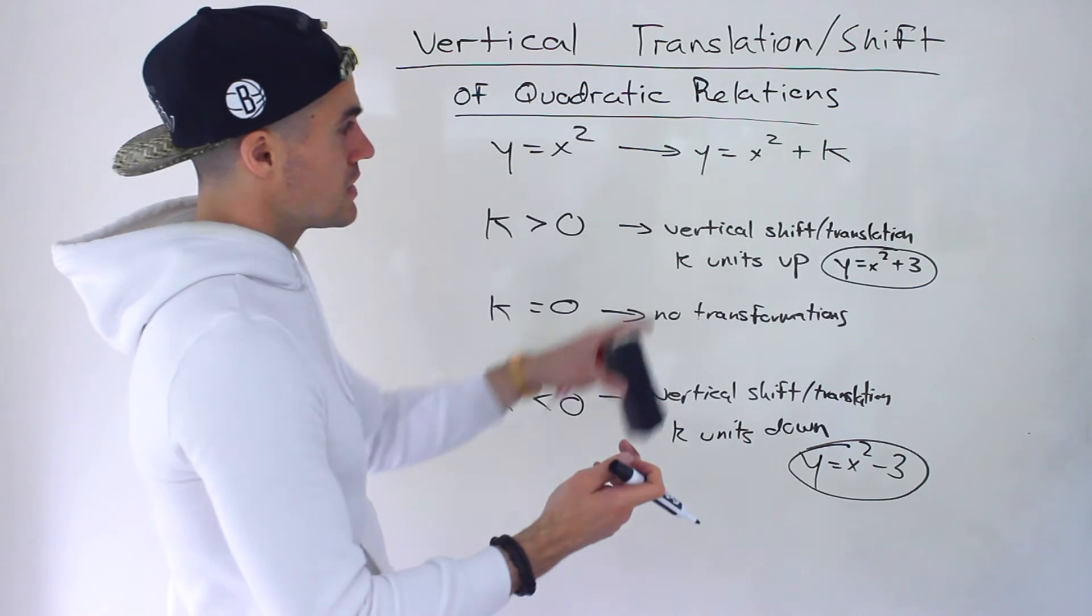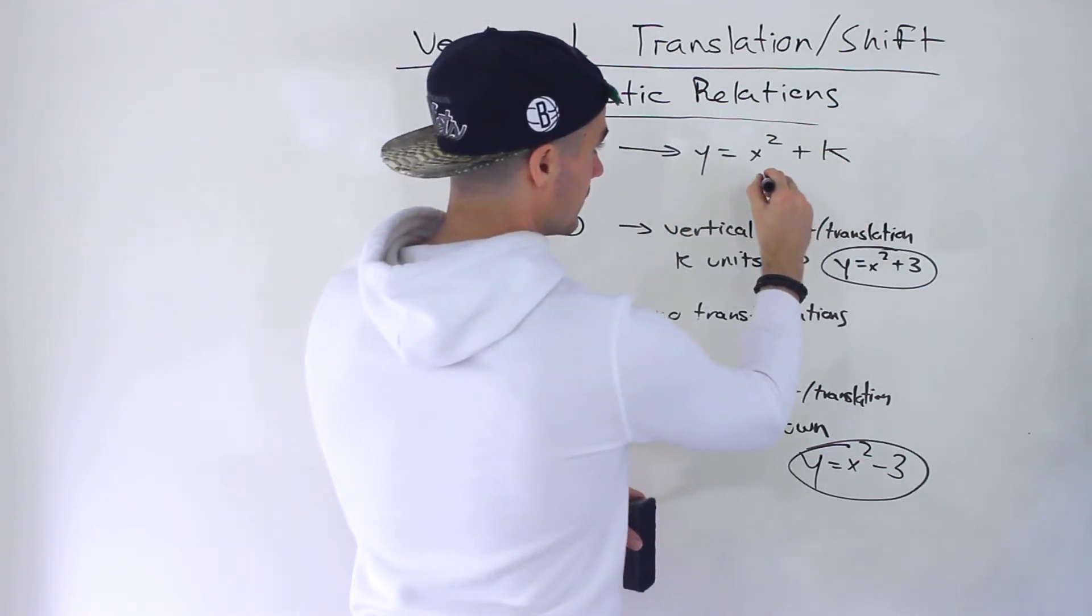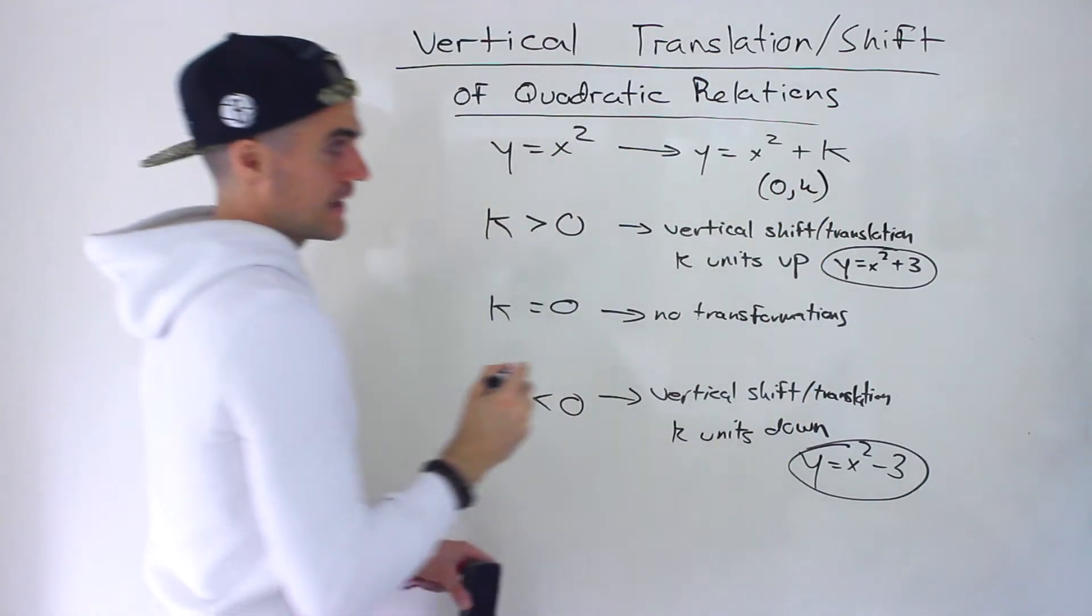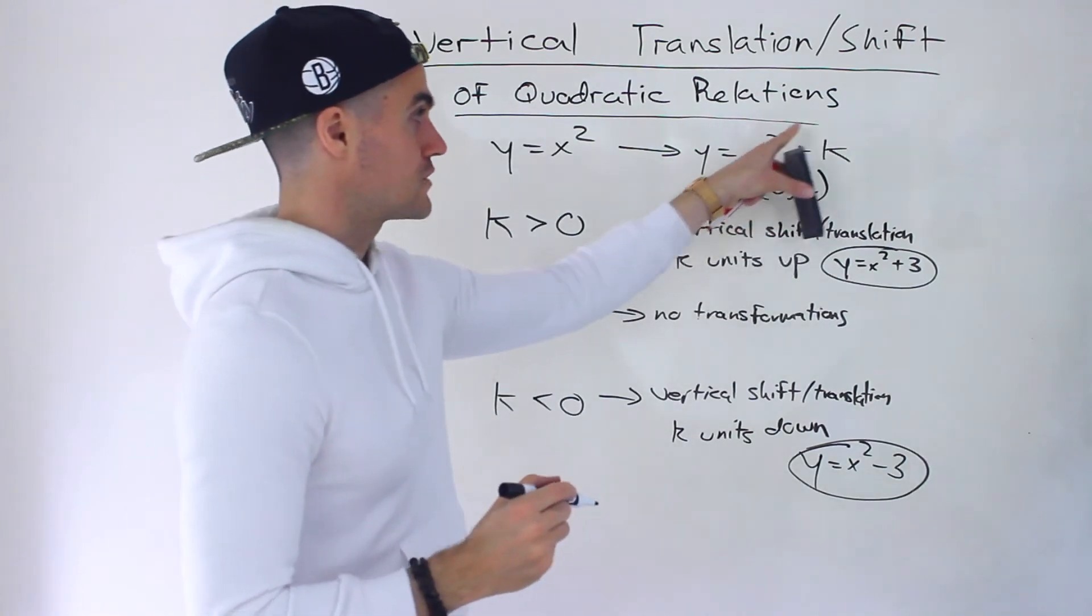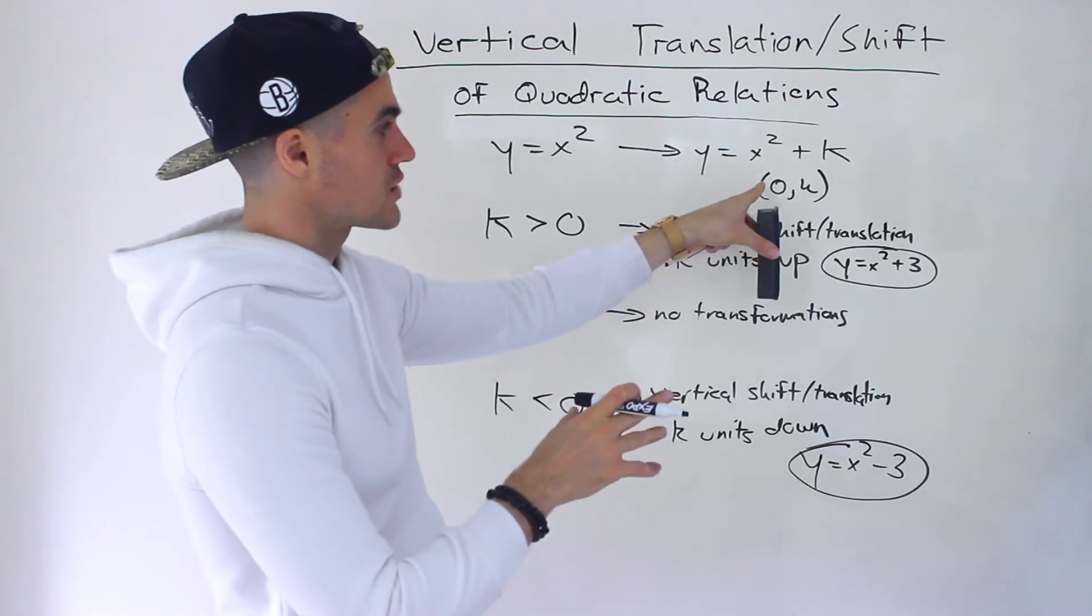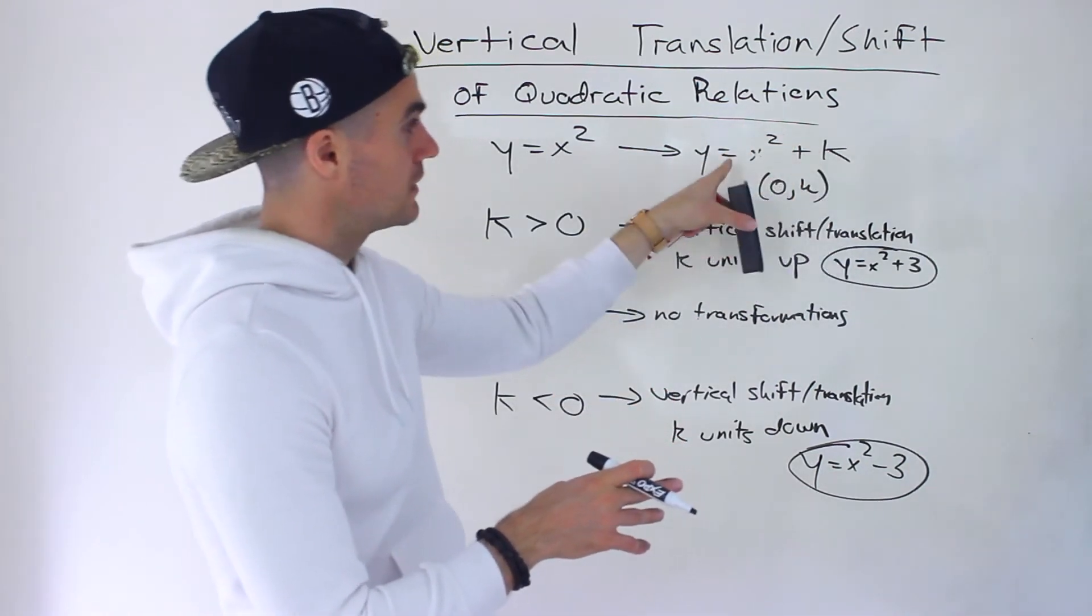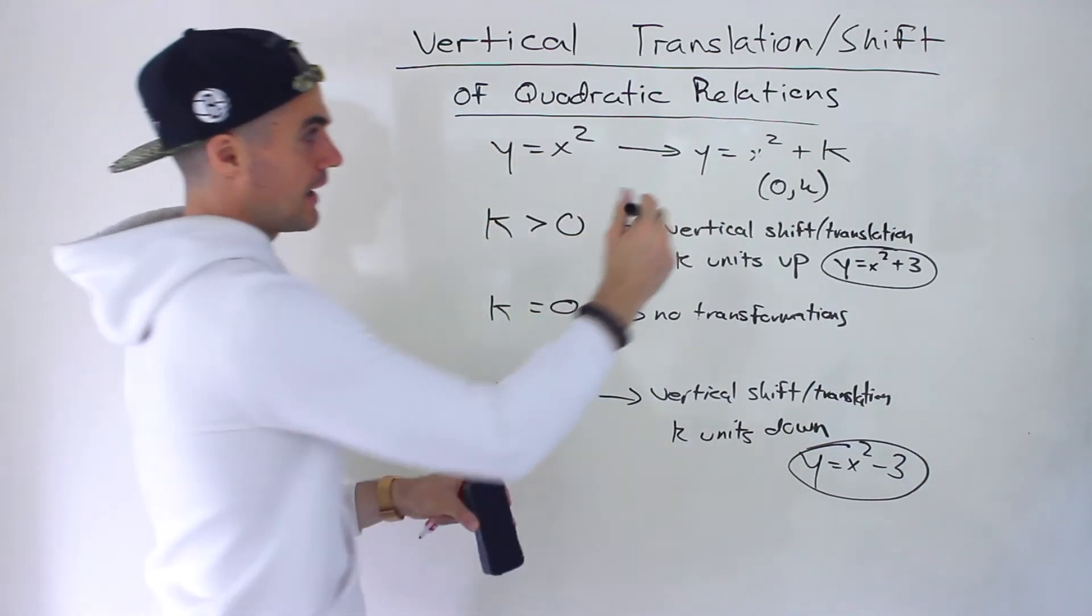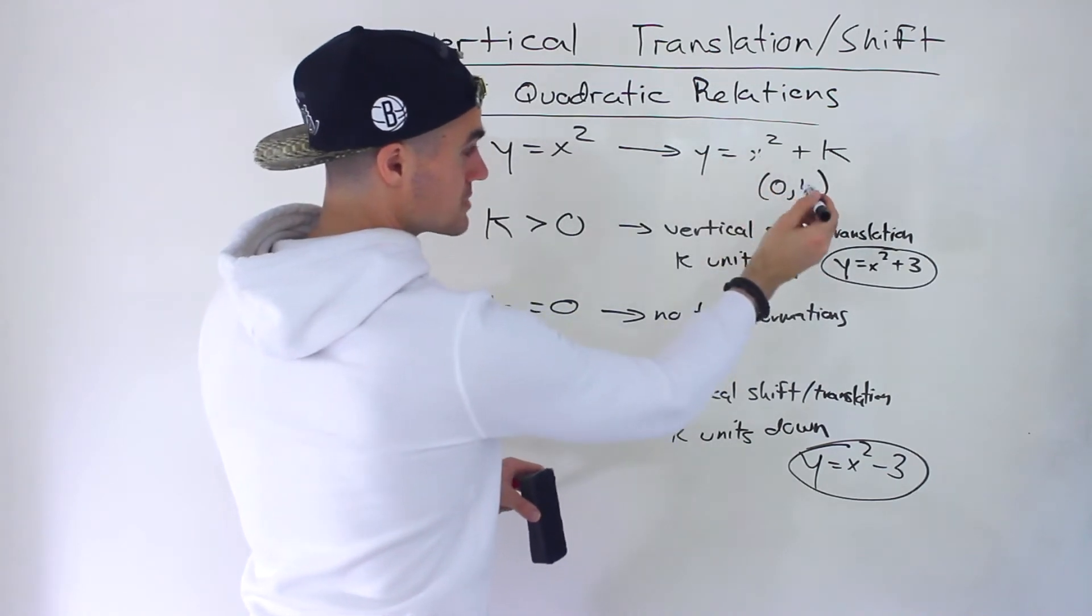In general, the vertex of a quadratic in this format is always at (0, k). If there's an h value involved as well, as you'll see when we mix all these transformations, the vertex is actually (h, k). But in this case, the h value is 0 because there's no bracket there. It's like x minus 0, which is just x. So for a quadratic in this format, the vertex is at (0, k).